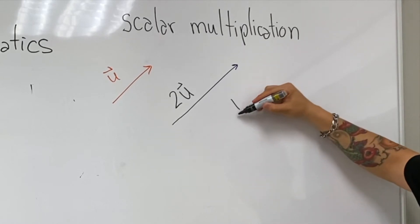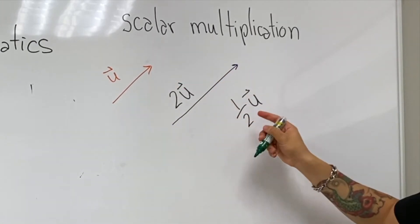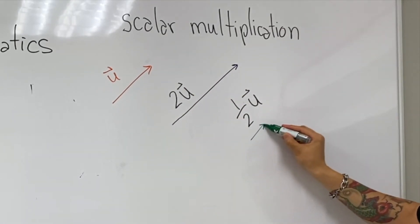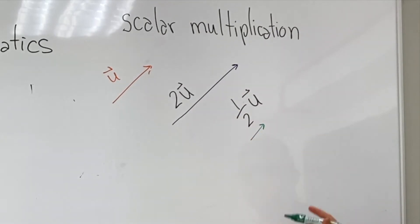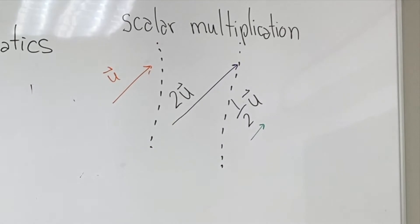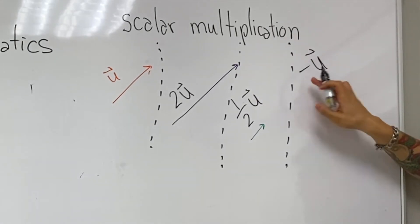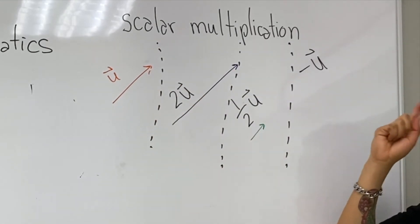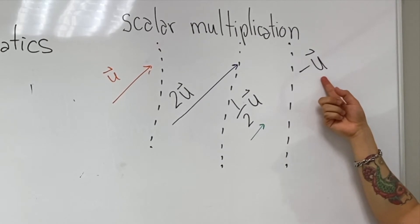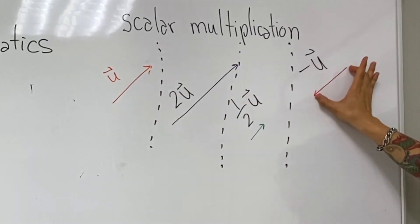What if we wanted to do half of u? It's going to be in the same direction, but half the length. Now the last one we need for scalar multiplication is negative u. If that's u, negative u means going in the other direction — the opposite direction. You keep the same length, but now you're going in the opposite direction.